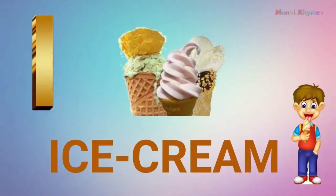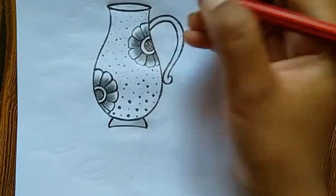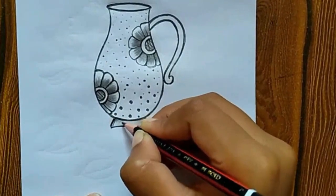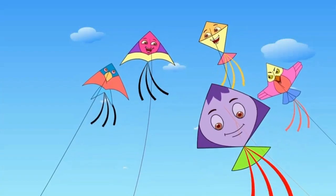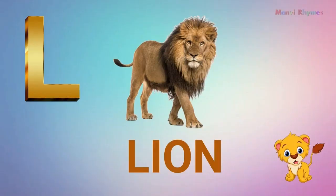I for ice cream. J for jug. K for kite. L for lion.